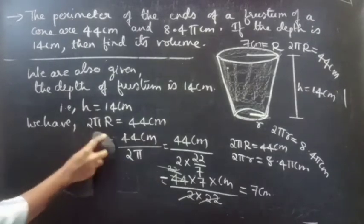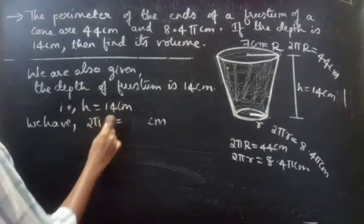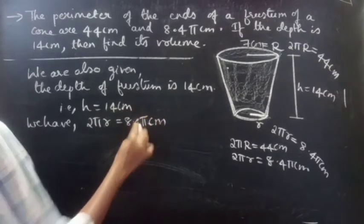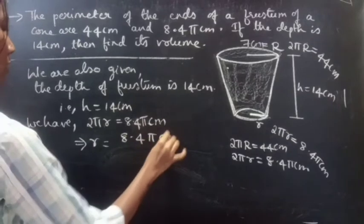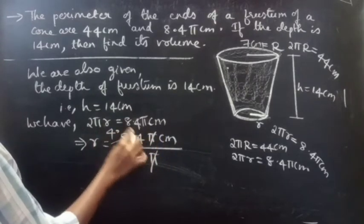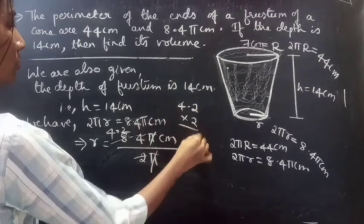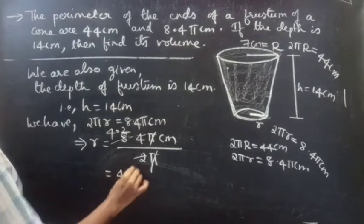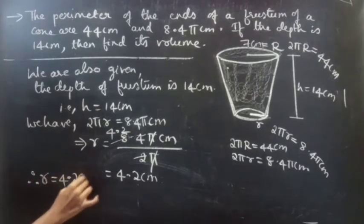Next we find the value of small r. We have 2π small r equals 8.4π cm, so small r equals 8.4π divided by 2π. The π cancels: r = 8.4 / 2 = 4.2 cm. Therefore, small r equals 4.2 cm.